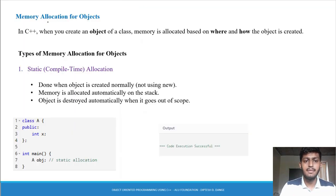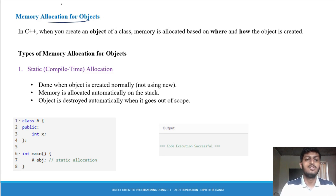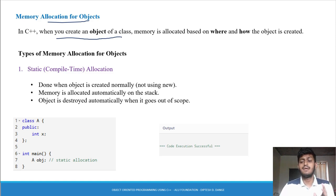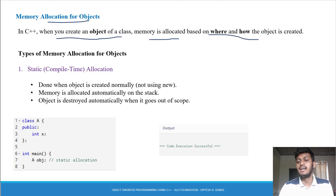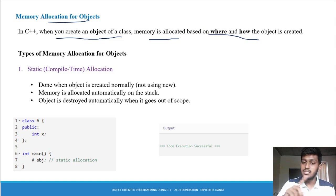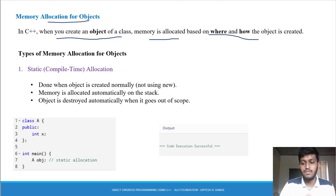Now let's get started with memory allocation for objects. In C++, when you create an object of a class — मतलब जब आप class का एक object create करते हो — तब memory allocate होती है on the basis of where and how the object is created. कहाँ और कैसे object create होता है, उस basis पर हमारी memory allocate होती है object के लिए.